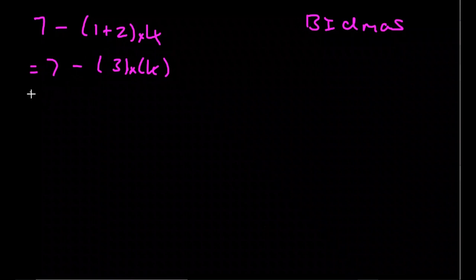Okay, so next we do the multiplication, so this is equal to 7 minus 3 times 4, which is 12. And all we've got left to do is subtraction, so 7 minus 12 is minus 5.